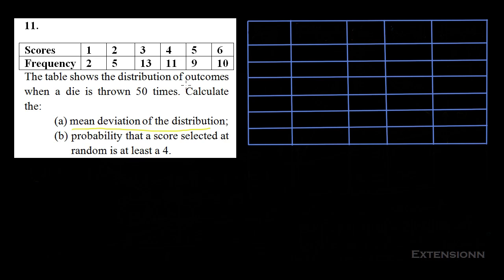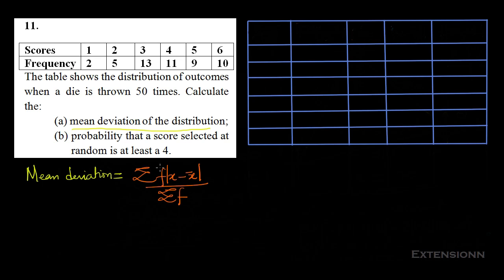To calculate the mean deviation, the formula is: mean deviation = Σf|x - x̄| / Σf. Here, f represents the frequency, x represents the scores, and x̄ represents the mean. The numerator is the summation of frequency times |x - x̄|, and the denominator is the summation of all frequencies.